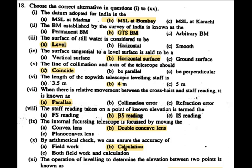Next question: The line of collimation and axis of the telescope should coincide. The telescope's axis and line of collimation should coincide. The length of the leveling staff is 4 meters.